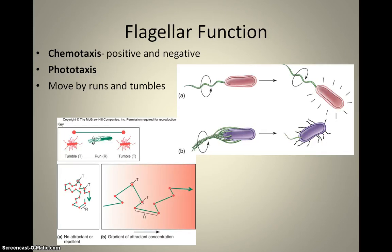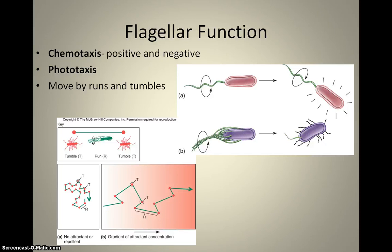How flagella function is really interesting. In order for the flagella to function, it has to be responding to some sort of chemical or physical stimulus. The movement of an organism towards or away from a chemical stimulus is called chemotaxis — it senses something in its environment and moves towards or away from it. Phototaxis is an interesting example where some bacteria can have their flagella respond to light. There are also some bacteria that do something called magnetotaxis, where they respond to a magnetic field.